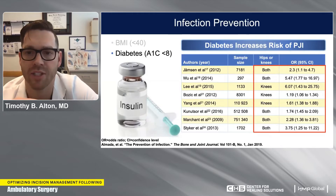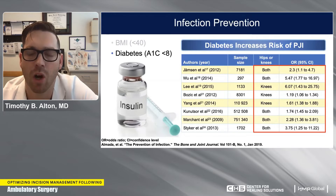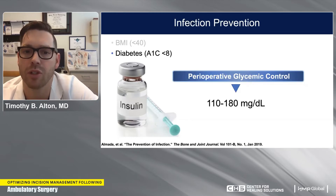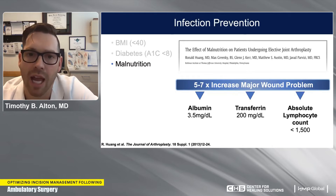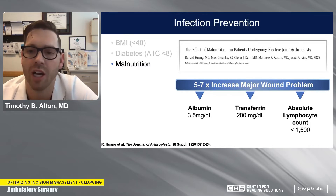Diabetes is critical. Elevated blood sugars increase your risk of wound infection around the time of surgery. We've adopted a hard A1C cutoff at 8 — some are being more conservative at 7.5 or even 7. Controlling blood sugars around the time of surgery, keeping them in the 110 to 180 range, has been shown to be very important for decreasing infection risk. Malnutrition is also important — there's an interesting paradox of the morbidly obese patient who is actually malnourished. Studies, specifically one out of Pennsylvania, show five to seven times increased major wound problems if nutrition markers are not adequate.